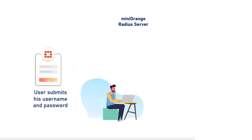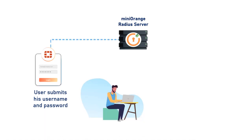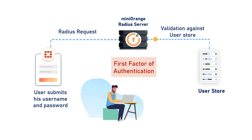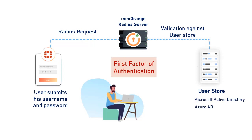The user submits his username and password, which is accepted by the Mini Orange Radius server as a Radius request. The user can be validated against any user directory like Microsoft Active Directory, Azure AD, OpenLDAP, or you can keep users in the Mini Orange user directory as well.